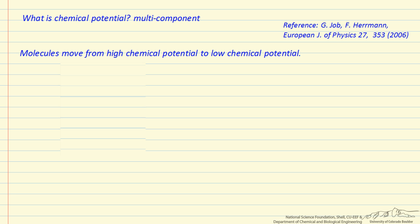This screencast will discuss chemical potential for a multi-component system. The importance of chemical potential is that it tells us the direction of mass transfer, because molecules will move from high chemical potential to low chemical potential.